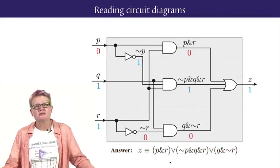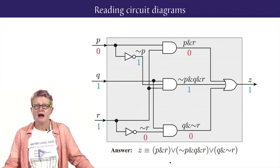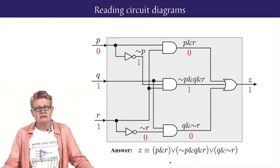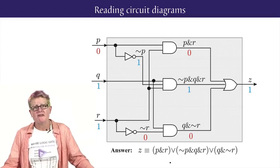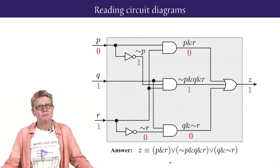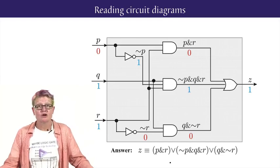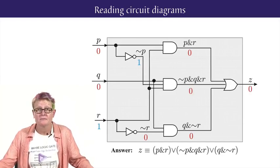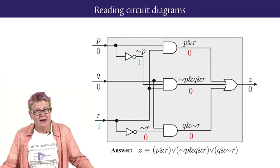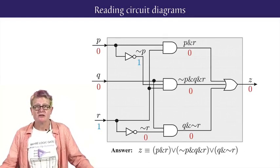By assigning some bit values to the input signals P, Q and R, we can see them propagate through the circuit, using the intermediate signal formulas, to end up with the final bit value for Z. Here, P, Q, R input 0, 1, 1 results in Z output 1. While P, Q, R input 0, 0, 1 results in Z output 0.